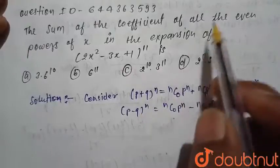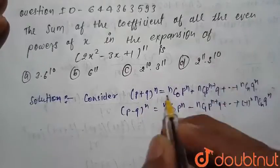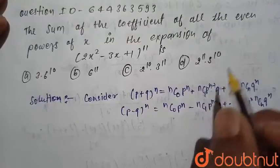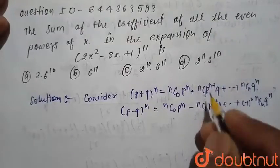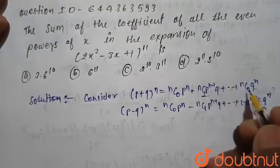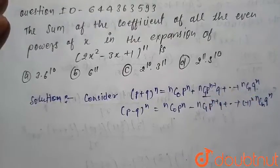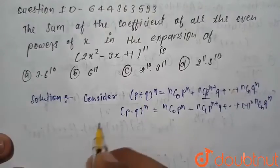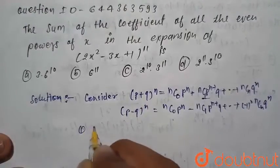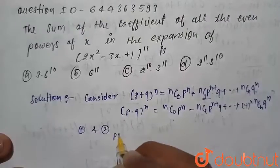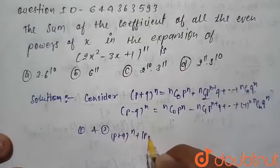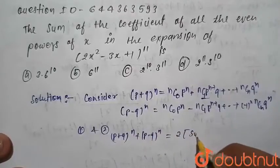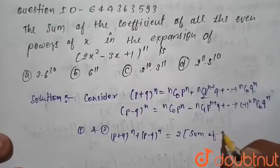If we want to find the even terms, we add these two equations — because we want to find all the even terms, that is terms 2, 3, and 4. Adding equations 1 and 2, we obtain: (p + q)^n + (p − q)^n = 2 times the sum of even terms.